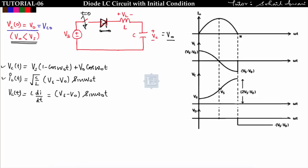From vc(t) and iL(t), we derive vL(t) = L·diL/dt = (Vs - V₀)·sin(ω₀t). The same concept applies — the diode conducts only when current is positive, i.e., only till π. So iL(t) is obtained only up to π, and the maximum current is √(C/L)·(Vs - V₀).